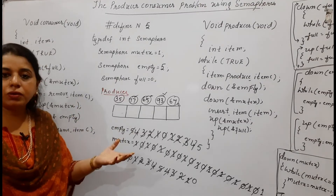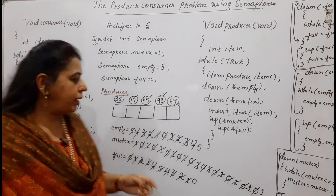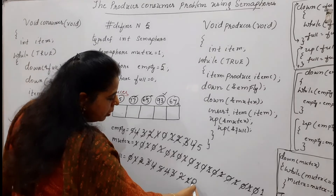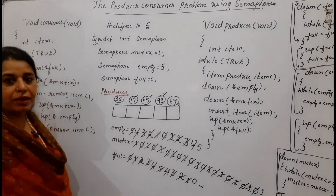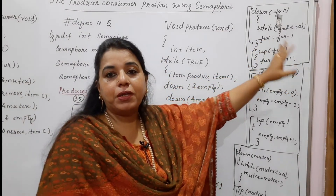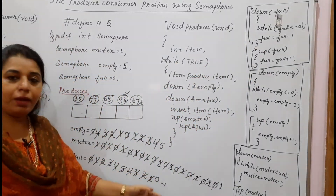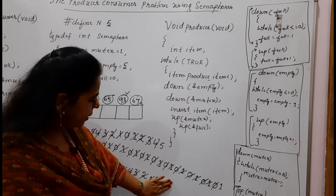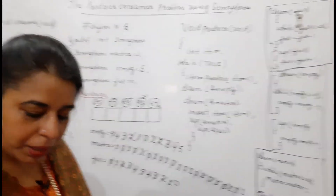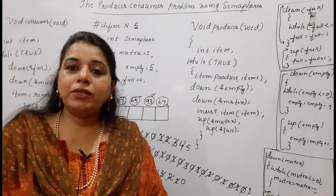When the consumer tries to consume from an empty buffer, it performs down on full. Full becomes minus 1. Checking the definition: minus 1 less than or equal to 0 — the condition becomes true. It stays in the loop and never proceeds further. The consumer is stopped from consuming once the buffer is empty. This is what we wanted, and the semaphore full achieves this.